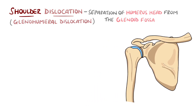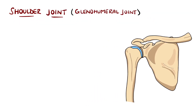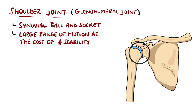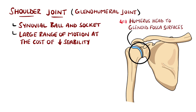It is a synovial ball and socket joint with a large range of motion, but at the cost of being more unstable. The head of the humerus is around four times larger than the shallow surface area of the glenoid fossa, which contributes to the large range of motion, but also to the instability.